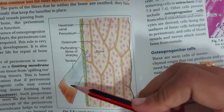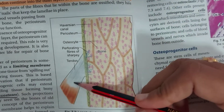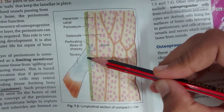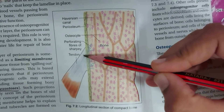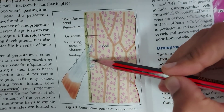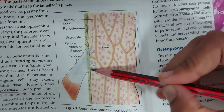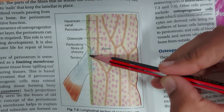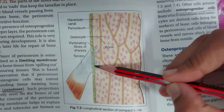Where the firm attachment of tendon to the bone is necessary, the fibers of the tendon continue into the outer layers of bone as the perforating fibers of Sharpey.